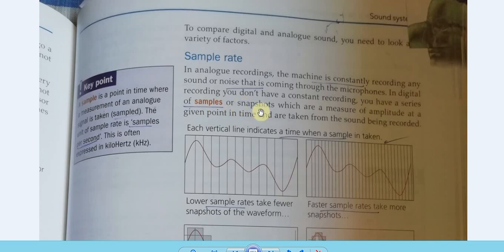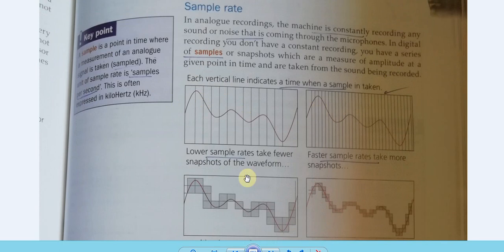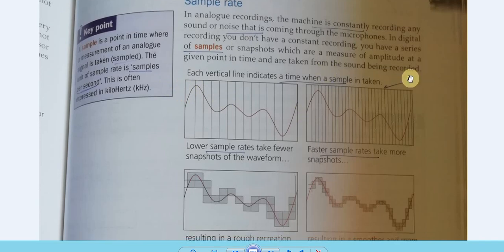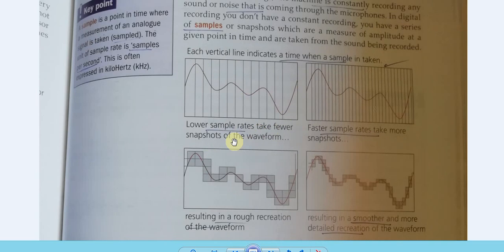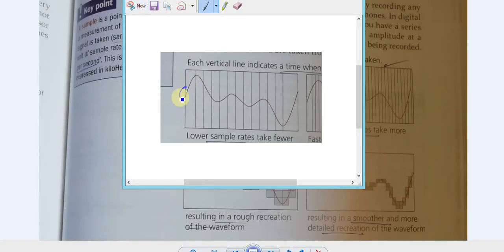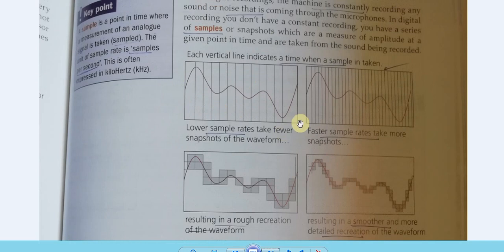Digital recording uses a series of samples or snapshots — measurements of amplitude at a given point in time. The waveform is mapped using these samples; amplitude is the height of the wave. This amplitude is then represented using digital data — ones and zeros. A lower sample rate takes fewer snapshots of the waveform, meaning there are gaps between samples and the data in those gaps is cut off, resulting in a less smooth output.